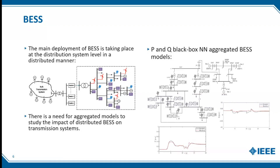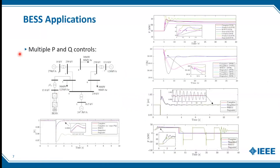We were focused particularly on the aggregated model. Basically you have a distribution system and medium voltage system connected to the grid, and using artificial intelligence and neural models — dividing P and Q — to capture the kind of services it could provide. We looked at multiple active and reactive power controls that can provide a series of services for the system in terms of voltage control and power frequency. We were also particularly interested in what impact energy capacity would have in the system, which can be quite significant.